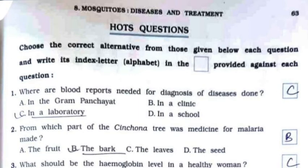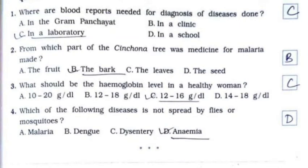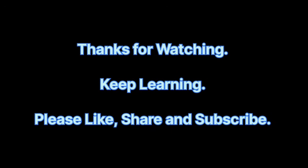Now we'll continue with the HOT questions MCQs. First: where are blood reports for diagnosis of diseases done? It's option C: in a laboratory. Second: from which part of the cinchona tree was medicine for malaria made? It's option B: the bark. Third: what should be the hemoglobin level in a healthy woman? It's option C: 12 to 16 grams per dL. Fourth: which of the following diseases is not spread by flies or mosquitoes? It's option D: anemia.